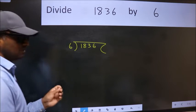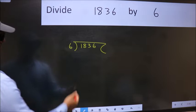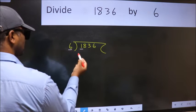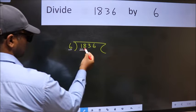This is your step 1. Next, here we have 1 and here 6. 1 is smaller than 6, so we should take two numbers, 18.